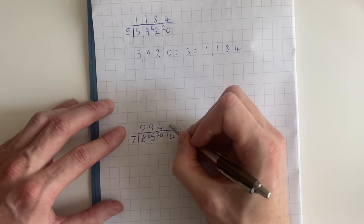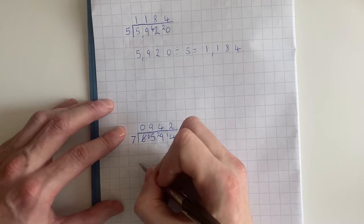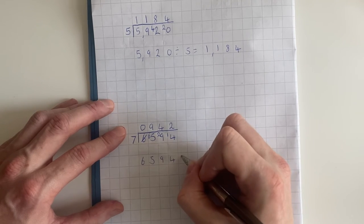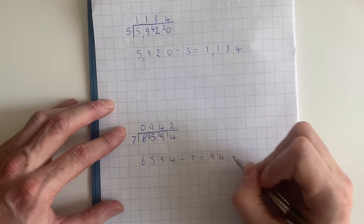Seven and that equals fourteen. How many sevens go into fourteen? Two. So our answer for six thousand five hundred and ninety-four divided by seven equals nine hundred and forty-two.